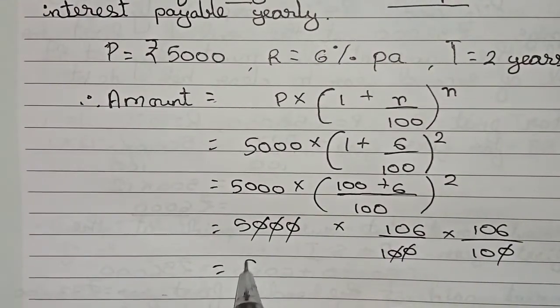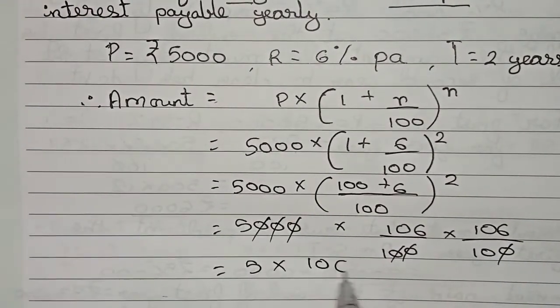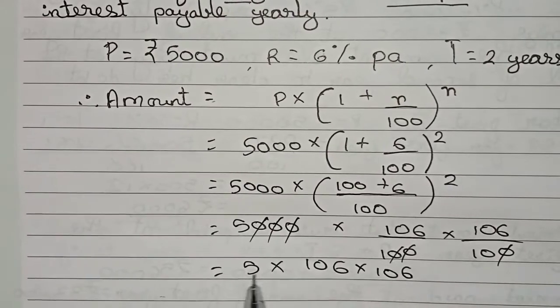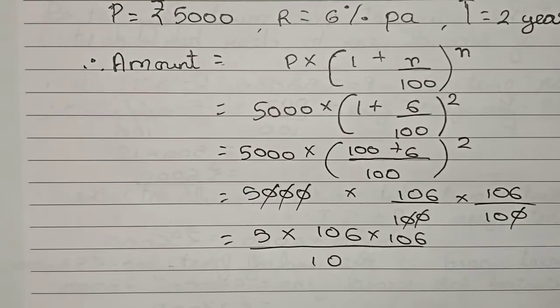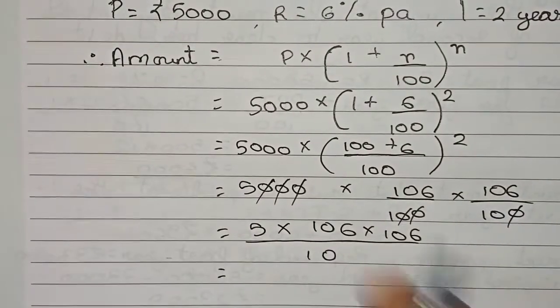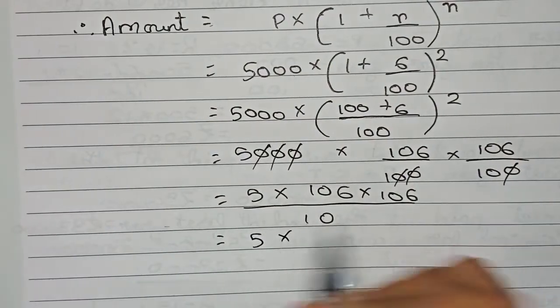So now what remains is 5 times 106 times 106 by 10. We are taking the 10 for convenience, it will be easy to put the decimal point. First we add 106 into 106, that is 5 into 106.